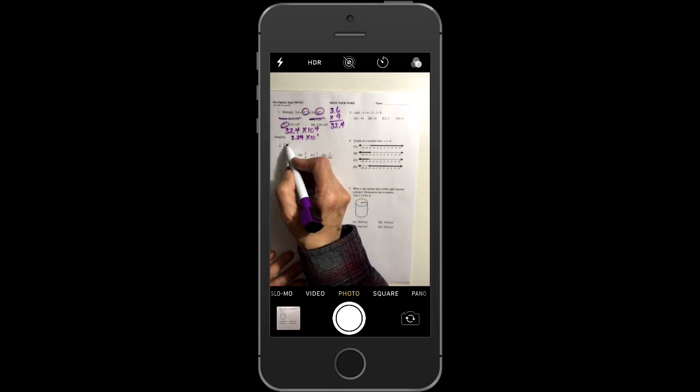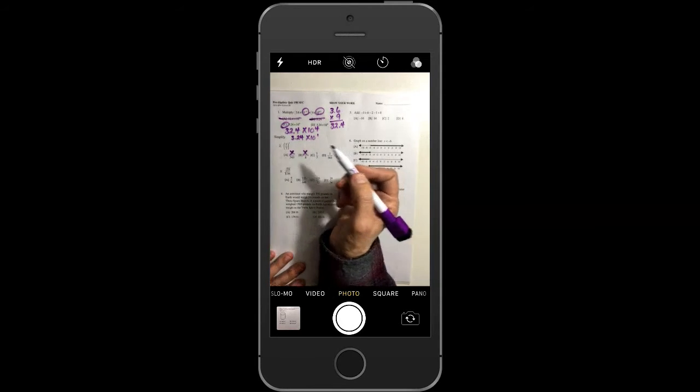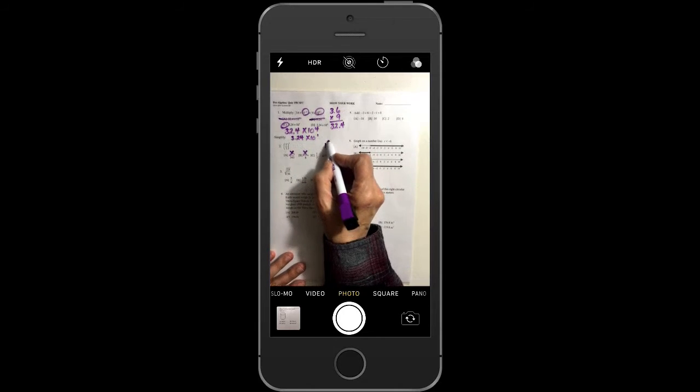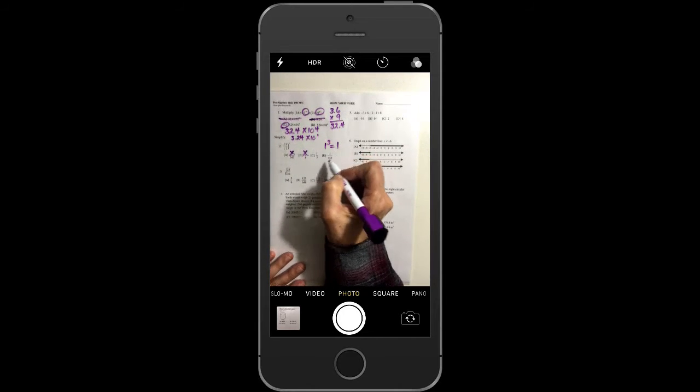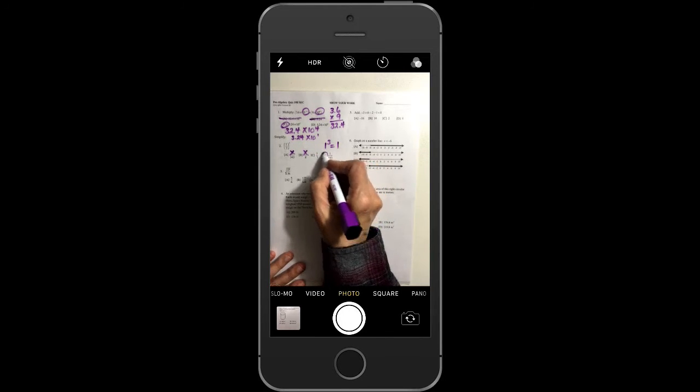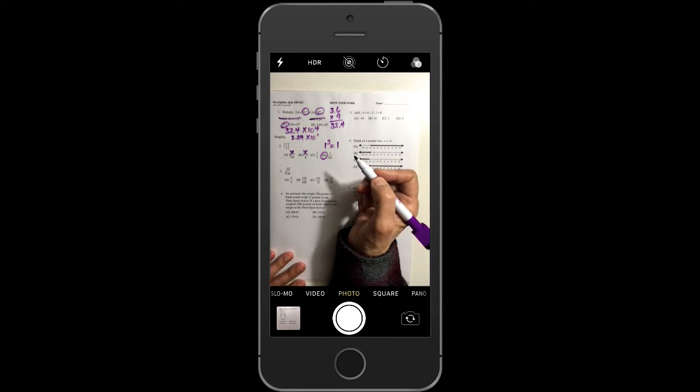On this one, probably if you missed it, you said 3 times 1 was 3. No, the answer's not 3 in the numerator. 1 to the 3rd power is equal to 1. And 7 times 7 is 49 times 7 is answer D.